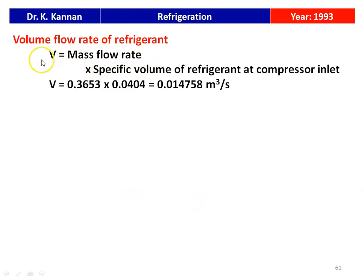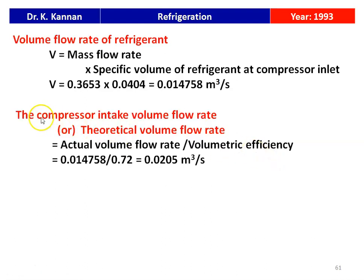The volume flow rate of the refrigerant = mass flow rate × specific volume at compressor inlet = 0.3653 × 0.0404 = 0.014758 m³/s. The compressor intake volume flow rate (theoretical) = actual volume flow rate / volumetric efficiency = 0.014758 / 0.72 = 0.0205 m³/s. This is the answer to the problem.